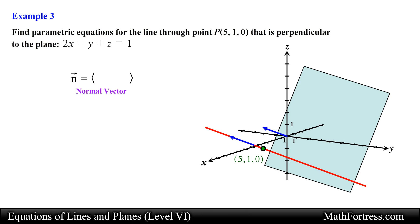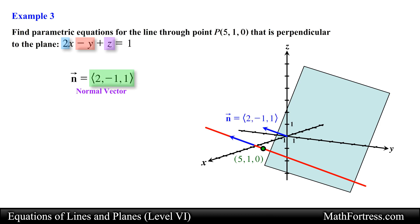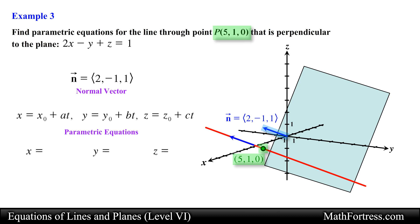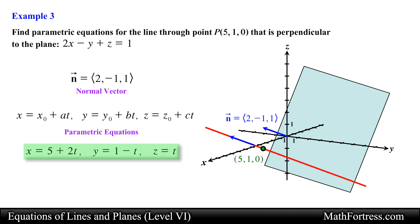We can easily find a normal vector to the plane by using its scalar equation. Recall that a normal vector to the plane can be obtained by using the coefficients of the scalar equation of the plane. In this case a normal vector to the plane has the following components. We can also use any scalar multiple of this vector, but we will use this particular normal vector for convenience. Now that we have a point and a direction vector for the line, we substitute the coordinates of point P for the initial point and use the components of the normal vector as our direction numbers to obtain the parametric equations. This is our final answer.